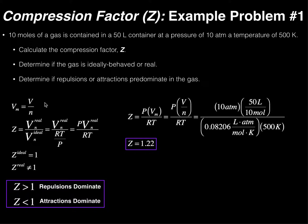Here is the example problem with the parameters shown. We have 10 moles of a gas contained in a 50-liter container at a pressure of 10 atmospheres and a temperature of 500 Kelvin. We want to first calculate the compression factor Z — it's unitless — and then determine if the gas is ideally behaved or real, and finally determine if repulsions or attractions predominate.